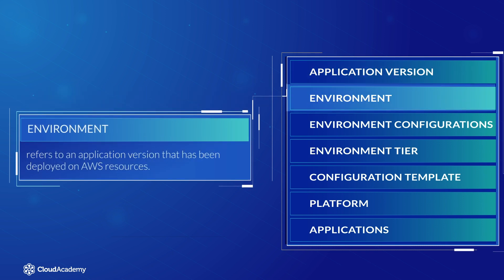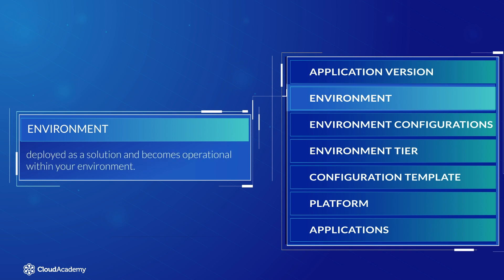The Environment: an environment refers to an application version that has been deployed on AWS resources. These resources are configured and provisioned by AWS Elastic Beanstalk. At this stage, the application is deployed as a solution and becomes operational within your environment. The environment is comprised of all the resources created by Elastic Beanstalk and not just an EC2 instance with your uploaded code.